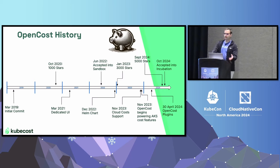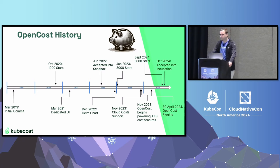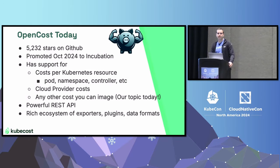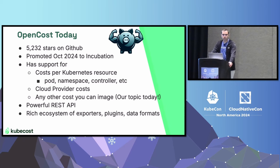What I love is that the time it took us to go from 3,000 to 5,000 stars is a lot shorter than 1,000 to 3,000. On the right side of my timeline, things feel like they're picking up, which is super exciting. As of when I got this stat, we were at 5,200-ish stars. And our big news — for those who missed it — is we got promoted a few weeks ago to incubation status. We're very excited about that.